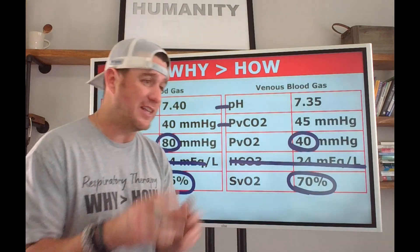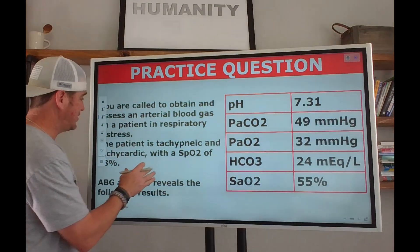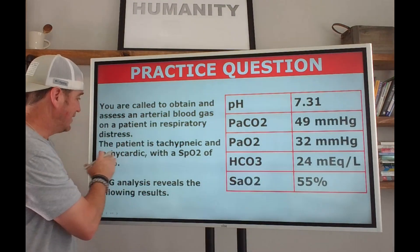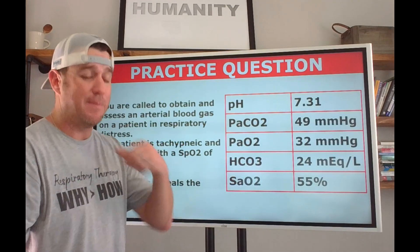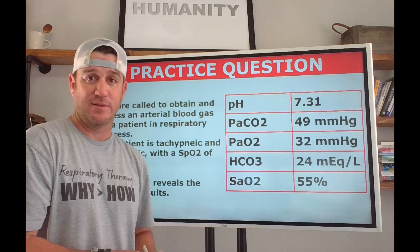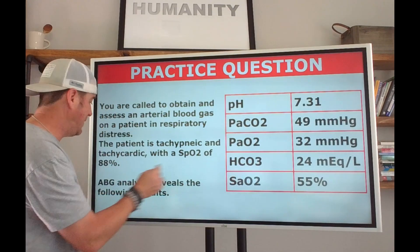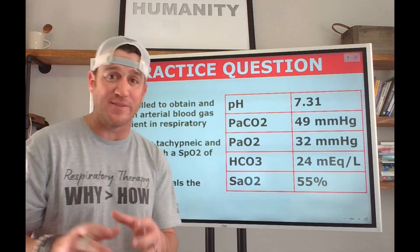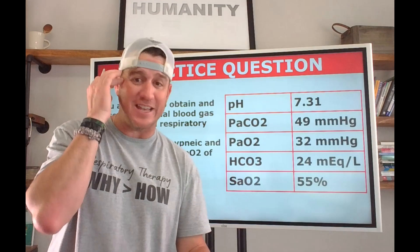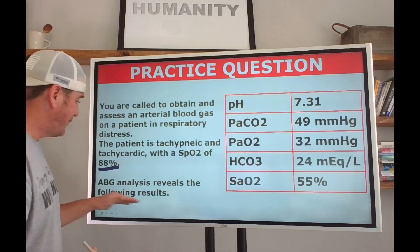Let's look at a practice question. You are called to obtain and assess an arterial blood gas on a patient in respiratory distress. The patient is tachypneic — breathing faster than 20 breaths per minute — and tachycardic, with a heart rate greater than 100 beats per minute, and an SpO2 of 88%. That 88% is very important. When you run the blood gas, you know the saturation was 88%.